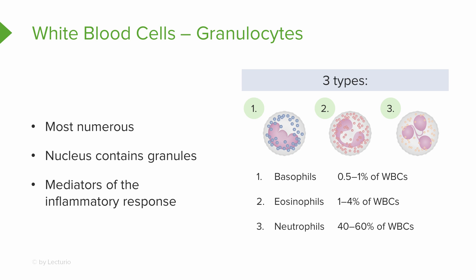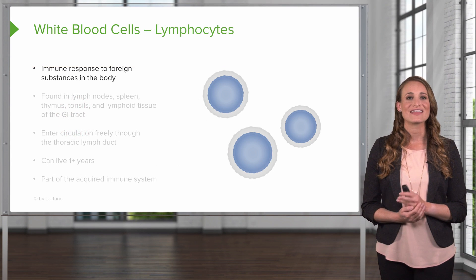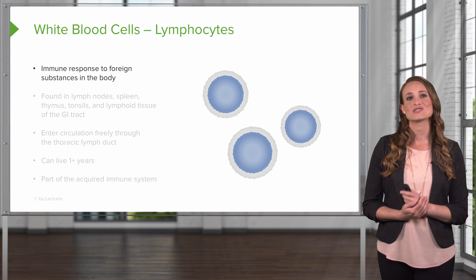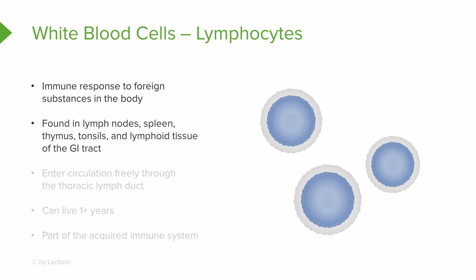Our third granulocyte is neutrophils, and these can perform phagocytosis and are the most abundant type of granulocyte. Now we'll cover the lymphocytes. These are the immune response to a foreign substance in the body. These are found in the lymph nodes, the spleen, the thymus, the tonsils, and the lymphoid tissue of the GI tract. They're going to enter the circulation freely through the thoracic lymph duct.